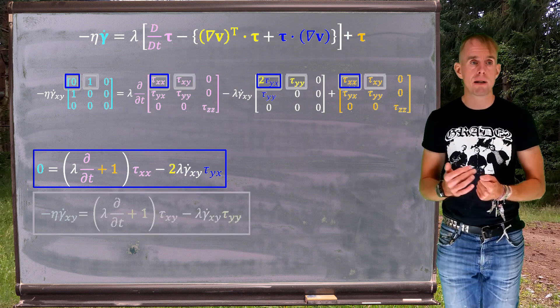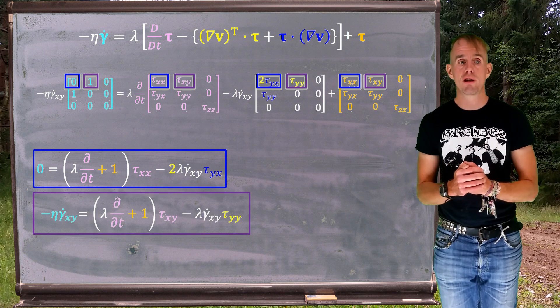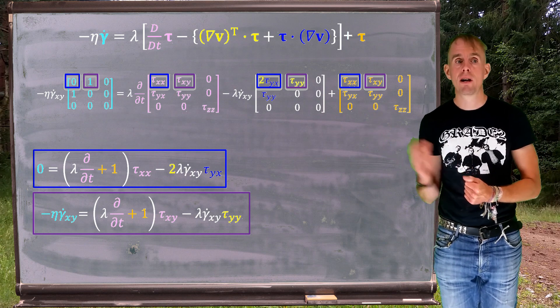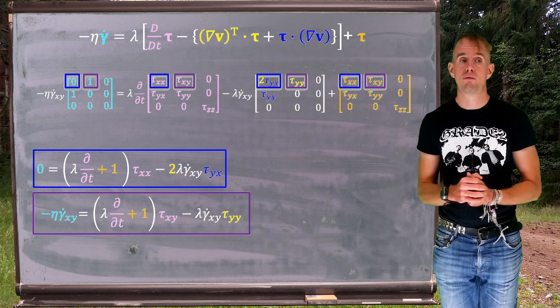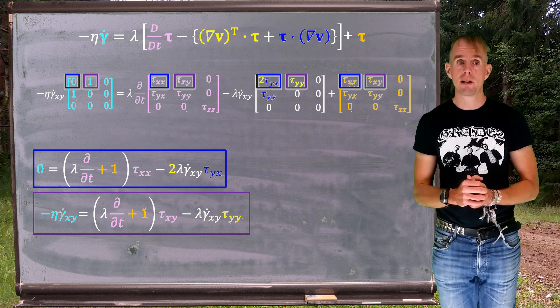We're going to do the same now for the 1,2 position. The left-hand side is now non-zero. You can see where the terms originate from on the right-hand side, because I've put purple boxes around them. And we end up with that equation that I've also shown in a purple box.